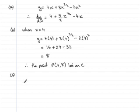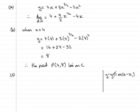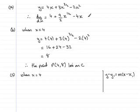A normal is a straight line, and any straight line has the format y minus y1 equals m times (x minus x1), where (x1, y1) is a point on the line and m is the gradient. To find the equation of the normal, the first step is to find the gradient. I'm going to substitute x equals 4 into the equation for dy/dx, which gives the gradient of the tangent to the curve at any point x.